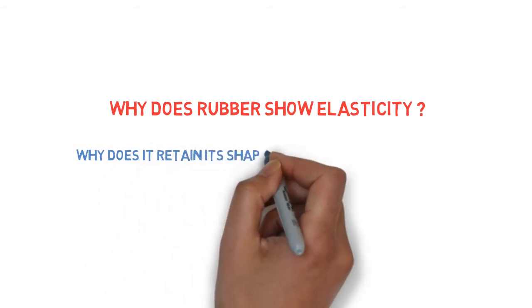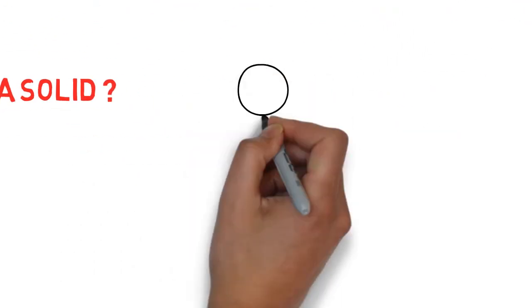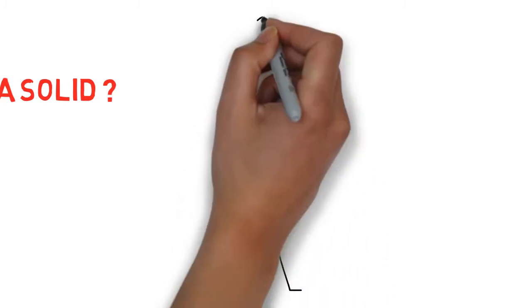Why does rubber show elasticity? Why does it retain its shape after removing the force? Can we even call it a solid? In this video, I'll explain why rubber shows these properties.